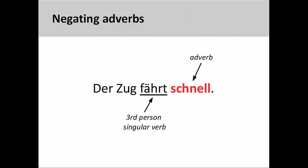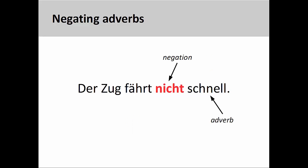We can do the same with adverbs. In this sentence, der Zug fährt schnell — the train runs fast — the adverb schnell describes the manner in which the train is running. To negate this adverb, we also insert nicht before it: der Zug fährt nicht schnell — the train doesn't run fast.